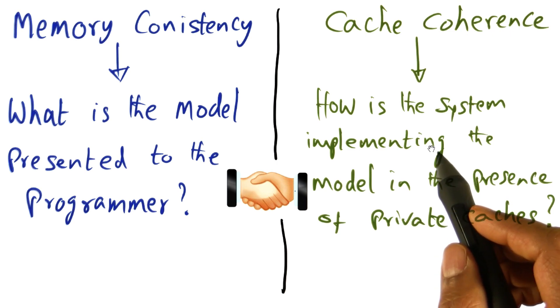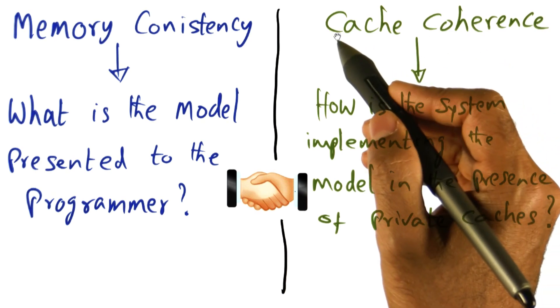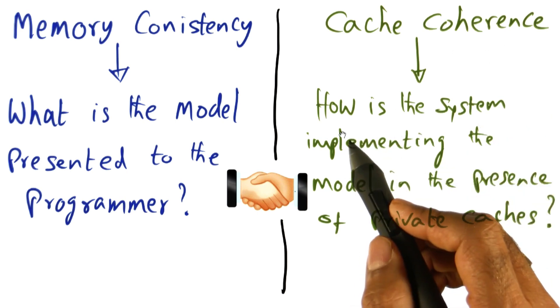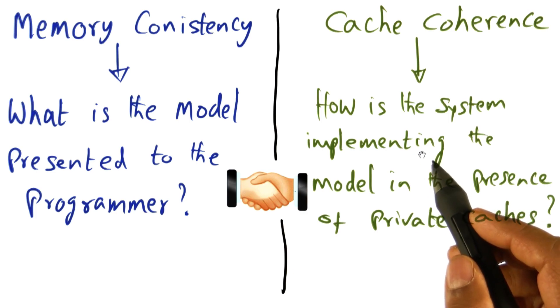The other possibility, of course, is that the hardware does everything. It provides the shared address space, but it also maintains cache coherence in hardware. And that's what is called a cache coherent multiprocessor, or a CC multiprocessor.